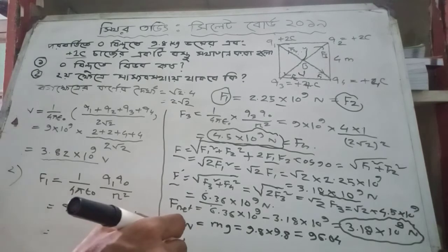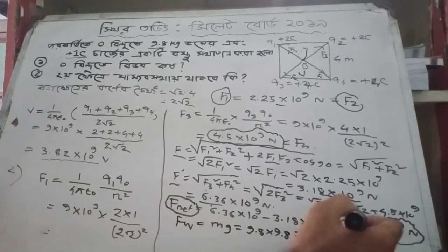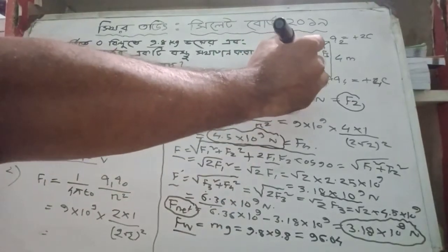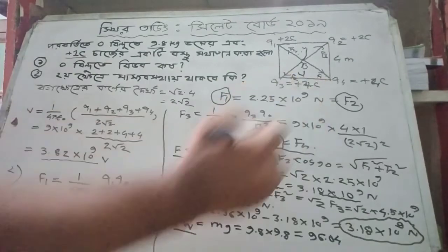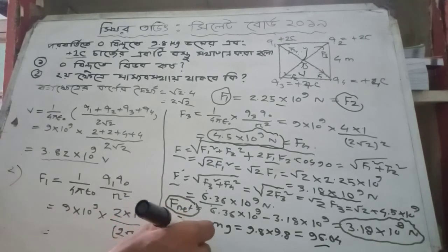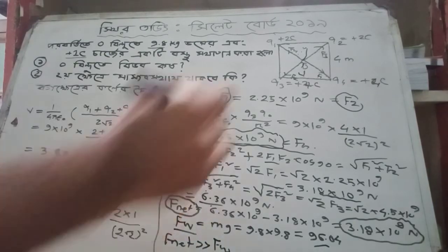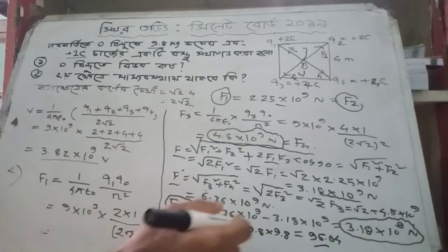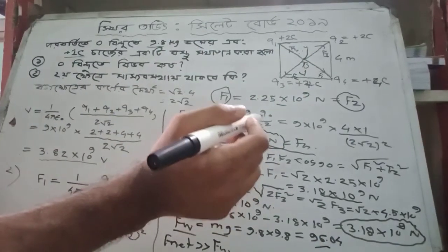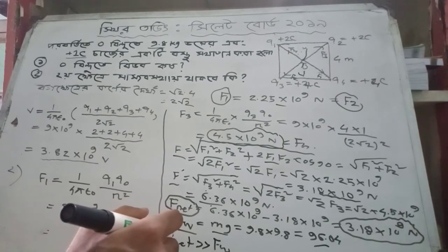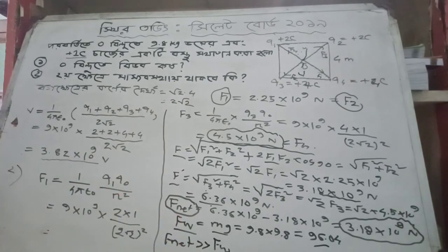The net electromagnetic force FN = 3.18 × 10^-9 acting upward, and FW = 96.04 Newton acting downward. Since FN is much less than FW, the object will not remain in equilibrium. If FN equaled the weight of the object, then the object would remain in equilibrium. Thanks for watching this video. If you have any physics problems, let us know in the comment section.